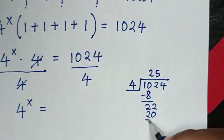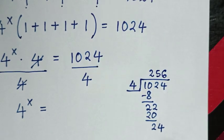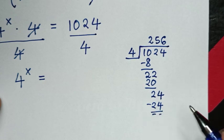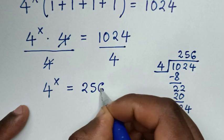So here 5 times 4 is 20, then left with 2, so it will be 24. Here 6 times 4 is 24. Then this divided by this is 256.